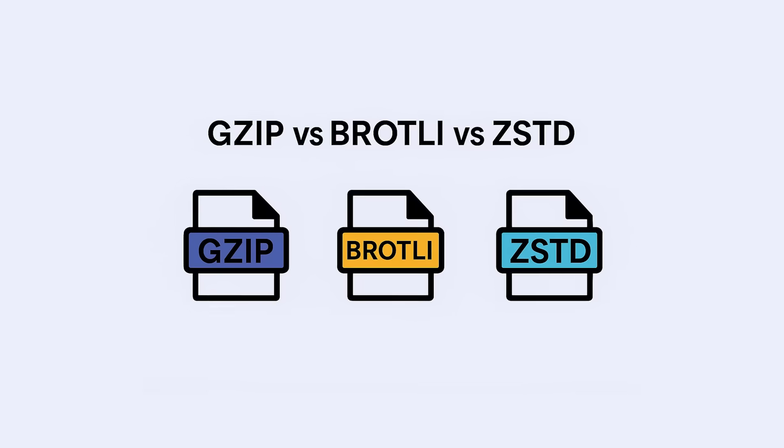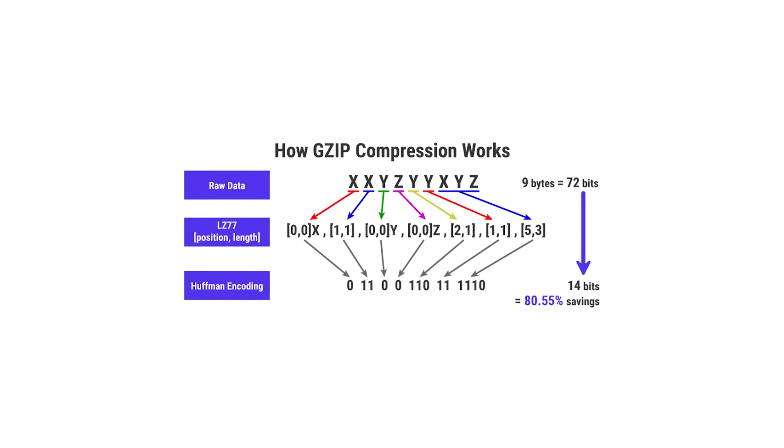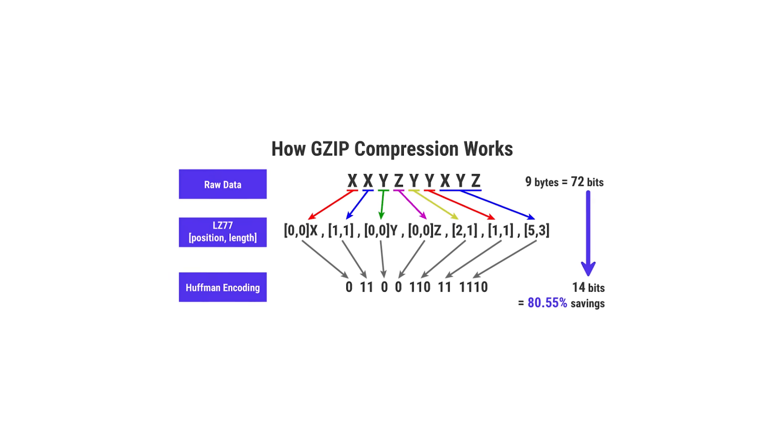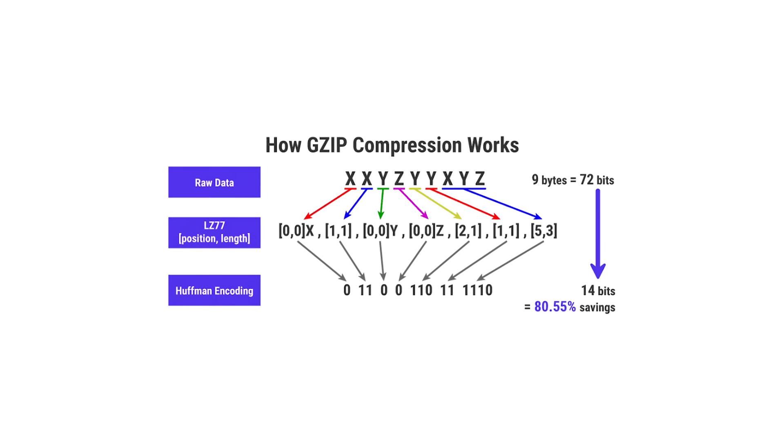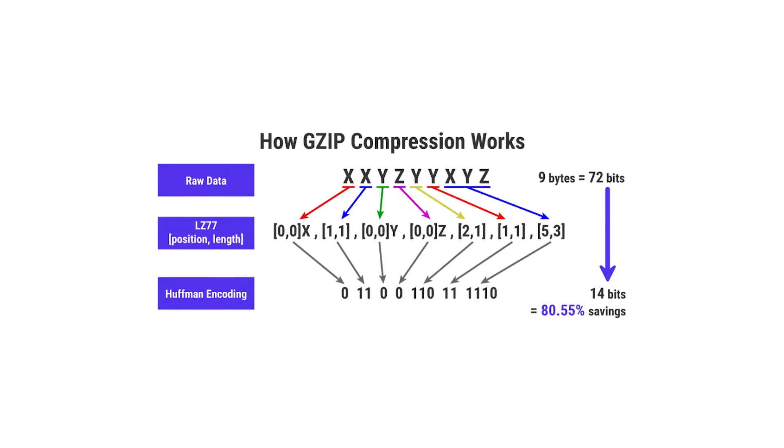Let's start with the problem. Tools like ZStandard or GZip are great general-purpose compressors, but they treat everything as a flat stream of bytes. Whether it's a CSV, a protobuf, or a nested JSON, they see the same thing — just bytes to pack tighter. That means they often miss opportunities.